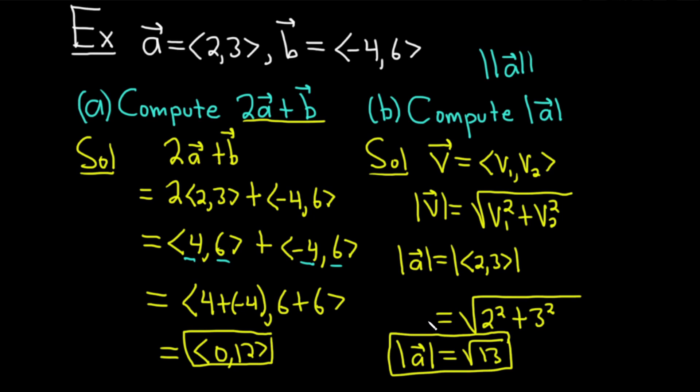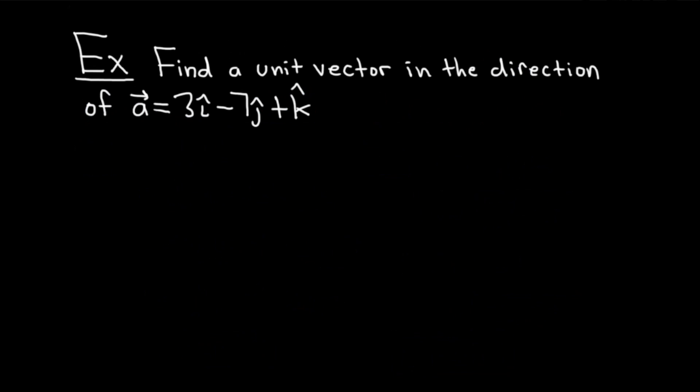Let's do an example that is a little bit more challenging. This example is very important because it comes up a lot in other problems. The question is to find a unit vector in the direction of, and then we have the vector a equal to 3i-hat minus 7j-hat plus k-hat. So a unit vector is a vector whose magnitude is 1. So it's a vector that has length 1. And that makes certain formulas really easy. So it comes up a lot in calculus.